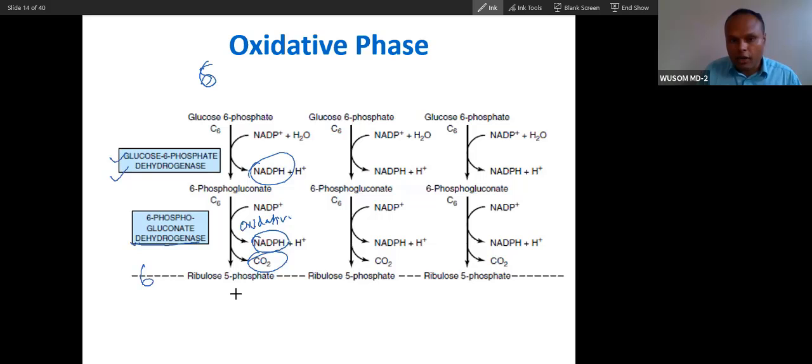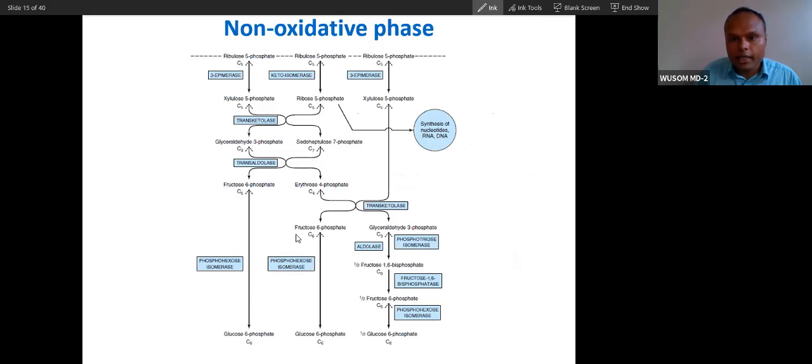Because exchange carbon transfer happens in next step. So carbon transfer happens by transketolase and transaldolase. So now, I will tell you, this may seem a very complicated reaction. Don't worry about it.